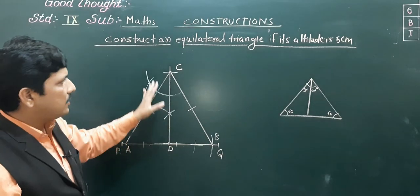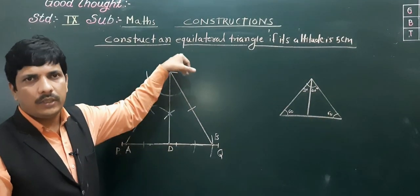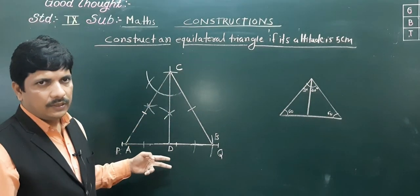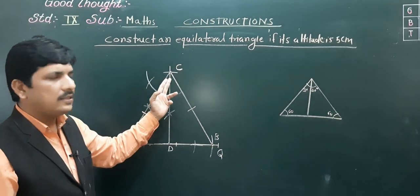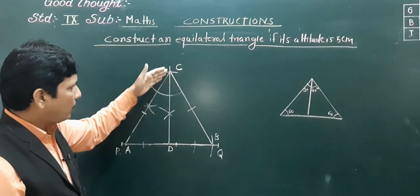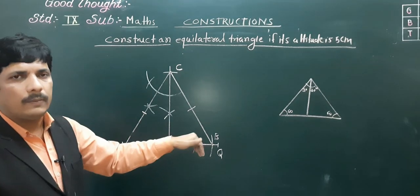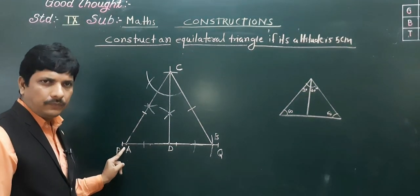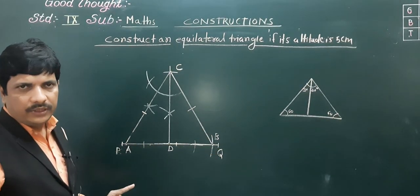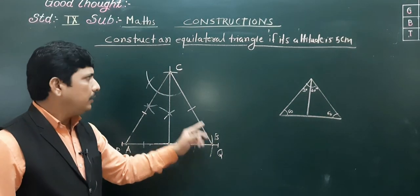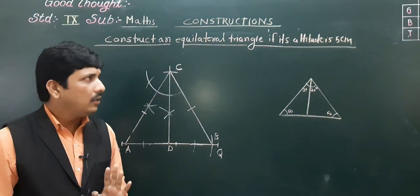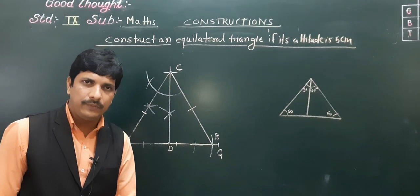Steps of construction for the equilateral triangle: First, take PQ of any convenient length and mark point D on PQ. Second, construct a perpendicular at D and mark the altitude of 5 centimeter — name that point C. Third, construct a 30-degree angle at C and extend the ray to intersect PQ at point A. Fourth, take distance AD and mark the same distance on the other side of D to get point B. Finally, join CB. This is the required equilateral triangle whose altitude is 5 centimeter.